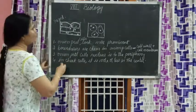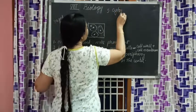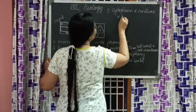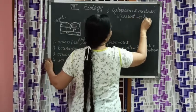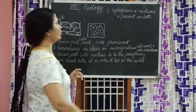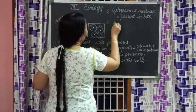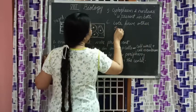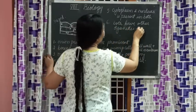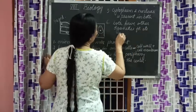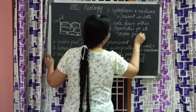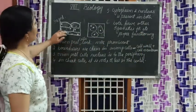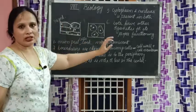The common features in both onion peel and cheek cells are: cytoplasm is present in both, and nucleus is present in both. Both also have other organelles for proper functioning. So this is about the difference between the plant cell and animal cell that we understood.